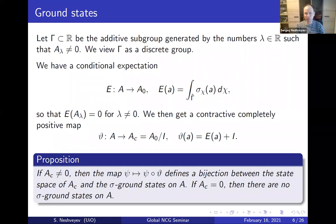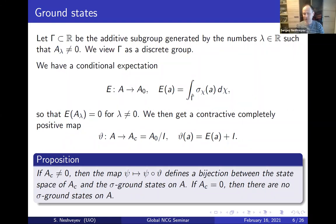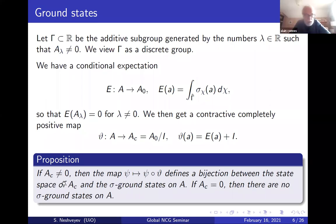One can think of this as cooling down the system. All these A_lambda are somehow responsible for equilibrium states at finite betas, and when we cool down everything disappears and only this very small system remains. So from the point of view of ground states this is the right C*-algebra. The question is then whether it contains useful information about the original C*-algebra.